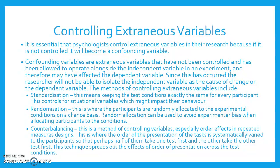Randomisation is where the participants are randomly allocated to the experimental conditions on a chance basis. Random allocation can be used to avoid experimenter bias when allocating participants to the conditions. Counterbalancing is a method of controlling variables, especially order effects in repeated measures design. This is where the order of presentation of the tasks is systematically varied so that perhaps the first half of the participants take one test first and the other half take the other test first. This technique spreads out the effects of order of presentation across the conditions.